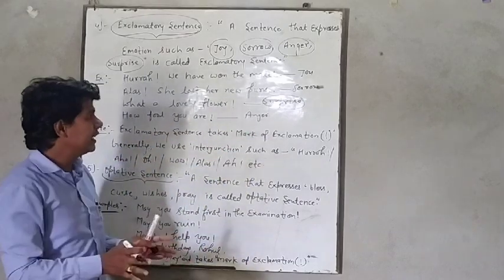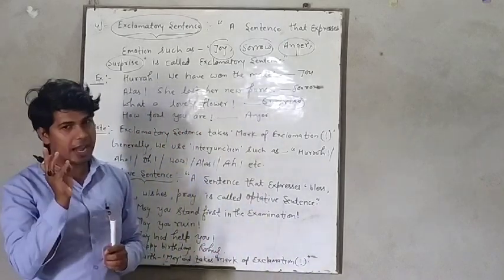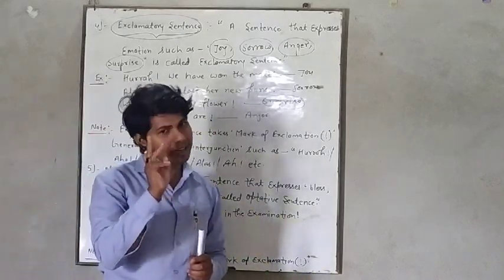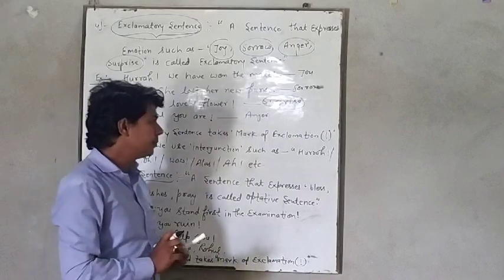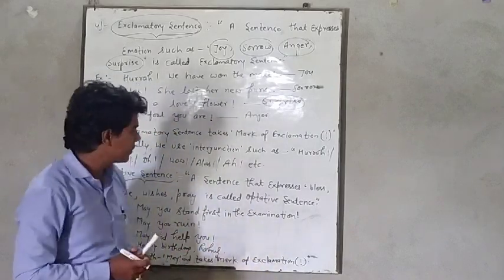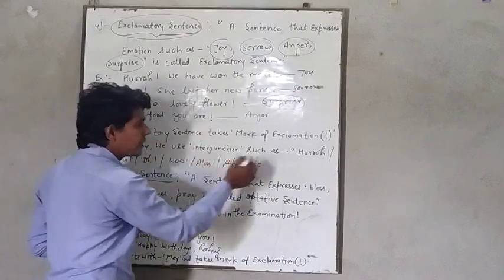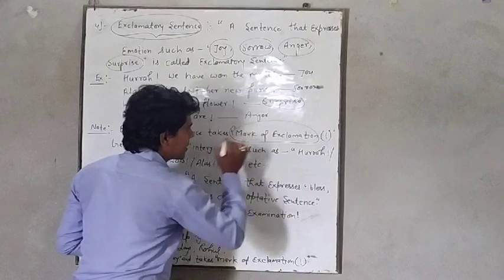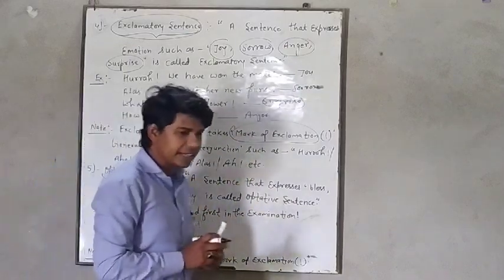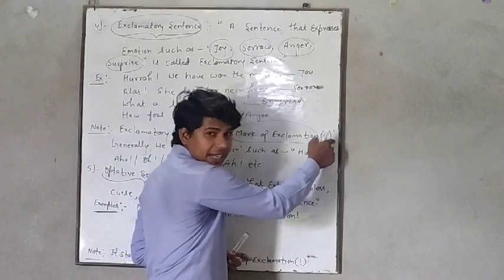Is that clear? So, that is clear that exclamatory sentence is used to express joy, sorrow, anger and surprise. Now, I am going to tell you some important facts about the exclamatory sentence. Exclamatory sentence takes mark of exclamation. In exclamatory sentence, we always use mark of exclamation.